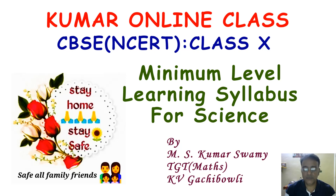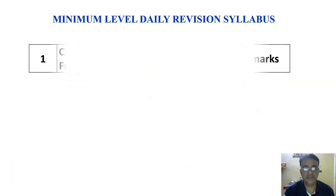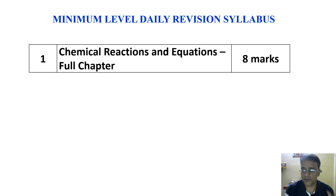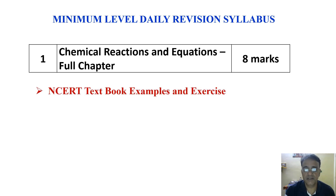Hello everyone, today I am going to discuss the minimum level learning syllabus for Class 10 Science. Let us start with the first chapter. My plan is that the student should start from Chemical Reactions and Equations — the first chapter — and they have to complete the full chapter from the NCERT textbook, including examples as well as exercises.